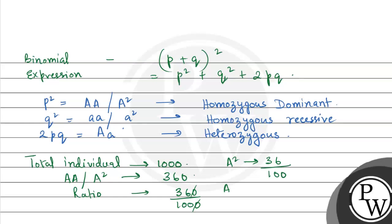And if we need to find individual A, then it will be root of 36 by 100, which is equal to 6 by 10, or equal to 0.6. So, in homozygous dominant condition, our population ratio that we're getting for A, which represents p, that is homozygous dominant condition, is 0.6.